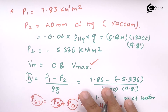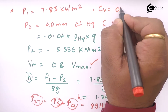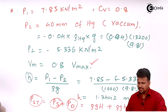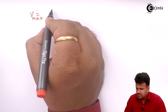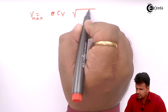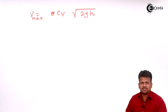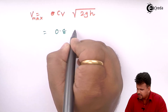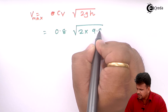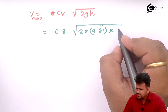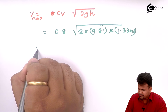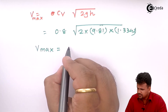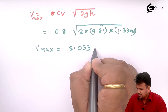Now we can calculate the maximum velocity. We know Cv equals 0.8, so the maximum velocity at the center equals Cv into square root of 2g into h, where h is the dynamic head. This equals 0.8 into square root of 2 into 9.81 into 1.3342, and V_max comes out to be 5.033 meters per second.